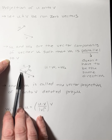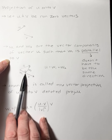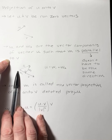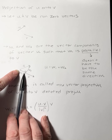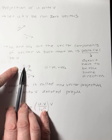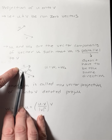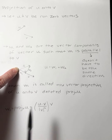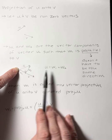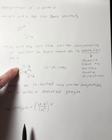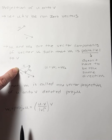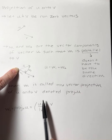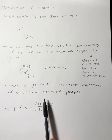Parallel means it doesn't necessarily have to be in the same direction. Parallel can mean opposite directions. These are the component vectors of u, and w sub 1 is parallel to v, so w sub 1 plus w sub 2 equals vector u. Again, parallel does not mean same direction — they can go in opposite directions.